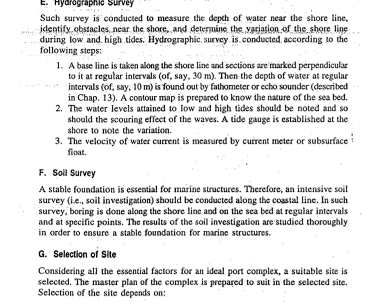The hydrographic survey is conducted as follows: a baseline is taken along the shoreline and sections are marked perpendicular to it at regular intervals of say 30 meters; the depth of water at regular intervals of say 10 meters is found out by a lead line or echo sounder; a contour map is prepared to know the nature of the seabed; water levels at low and high tides should be noted, as should the scouring effect of waves; a tide gauge is established at the shore to note variations; and the velocity of water current is measured by a current meter or subsurface float. For soil survey, an intensive soil investigation is conducted along the coastal line with boring done along the shoreline and on the seabed at regular intervals and at specific points, so that the results can be studied to ensure a stable foundation for marine structures.